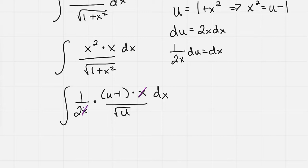My x's divide into each other, so I get rid of that single x. I'm left with everything in terms of u, and that's a du, not a dx.